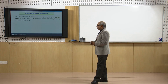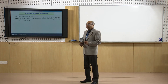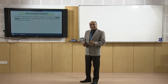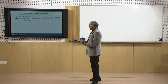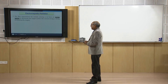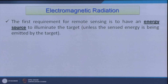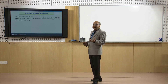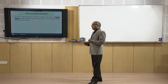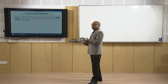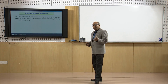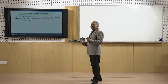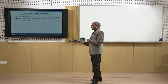The first requirement for remote sensing is to have an energy source — that might be an external energy source or internal energy source — to illuminate the target, unless the sensed energy is being emitted by the target. Two ways: one is either solar energy, or natural heat being emitted by the earth. In case of radar or active remote sensing, the energy comes through the satellite, so there also you have some external energy source.